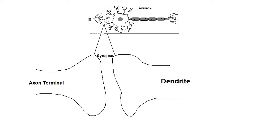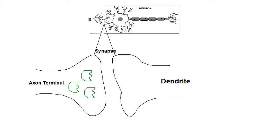Neurons communicate using little things called neurotransmitters — these little balls that exist in the axon terminal. I'm trying to draw them so they look like a key, because they fit very specifically into what are called receptor sites on the dendrite. So there's kind of a square, an oval, and a triangle — imagine there are a lot of these on the axon terminal, and they fit into receptor sites on the dendrite.